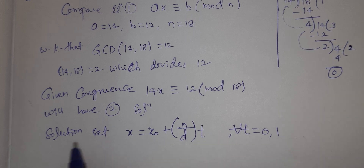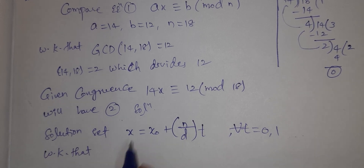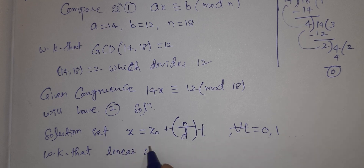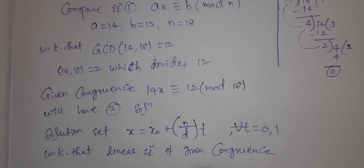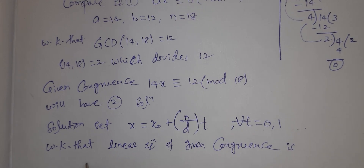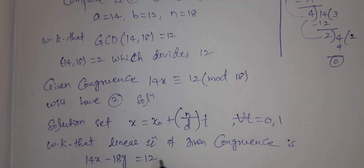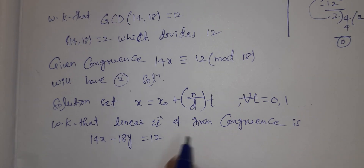The solution set is x = x₀ + (n/d)·t. We know that the linear congruence can be written as the linear equation: 14x − 18y = 12.